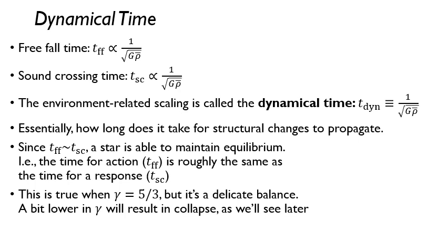This is true when you have your adiabatic constant as five-thirds like an ideal gas. But as you saw, these are basically on the same order - it's a very delicate balance. As we'll see when we do a more sophisticated derivation, if your adiabatic constant is a little bit lower, then you will get a collapse.